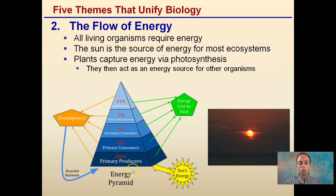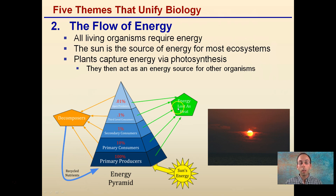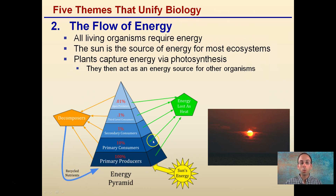The sun's energy at the very bottom is producing for our primary producers — that's their main source of energy. Then we have primary consumers, secondary consumers, third level consumers, and apex predators. A lot of energy is being lost to heat. We can't create or destroy energy, but a lot is being lost to heat. These organisms are being broken down by decomposers, and those nutrients are being recycled in a kind of circle. Notice the drop from 100% down to 10% — this is how much we're losing to heat, which is why there are so few apex predators and so many primary producers.